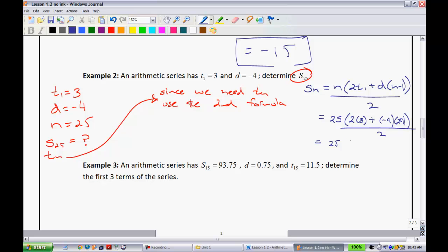So let's simplify, we have 25, 2 times 3 is 6. Negative 4 times 24, well I know that 4 times 25 is 100, so 4 times 24 must be 96, and we have a negative. All divided by 2, and I'll try and crunch it in here. We have 25, and then 6 minus 96 is going to give you negative 90. Negative 90 divided by 2 is negative 45, and if we multiply those together, we get negative 1,125.